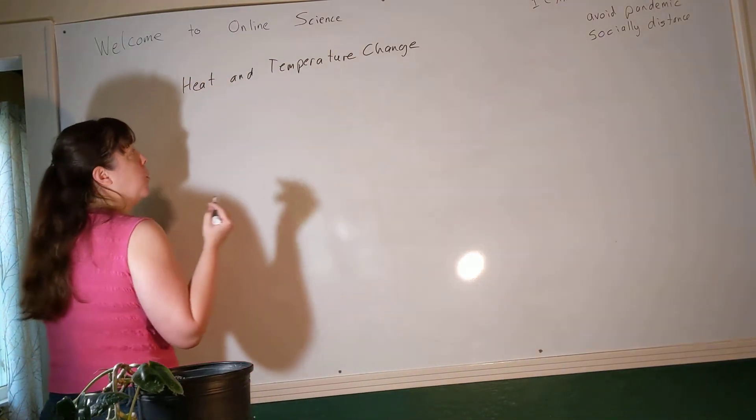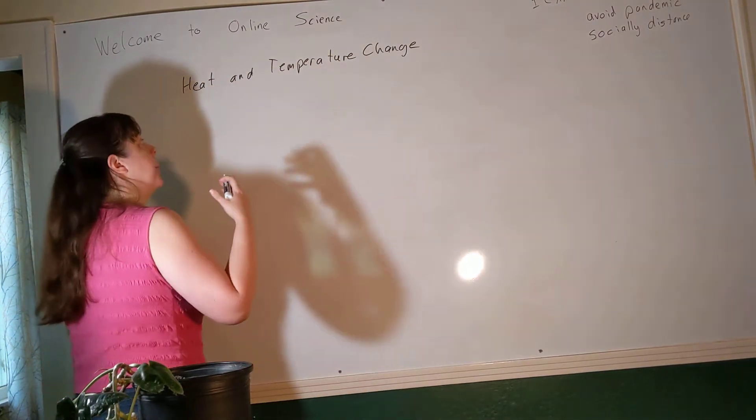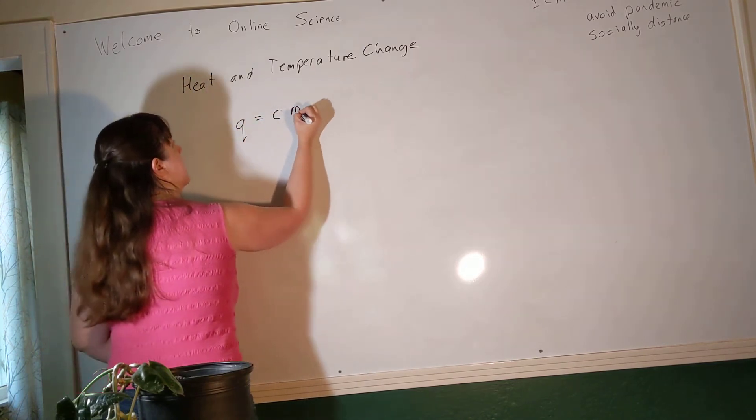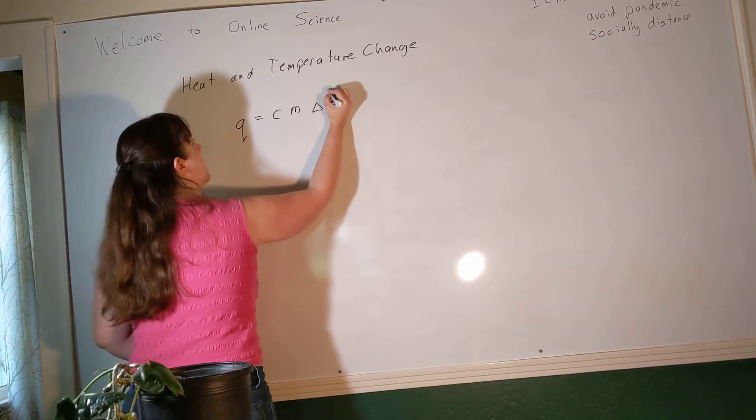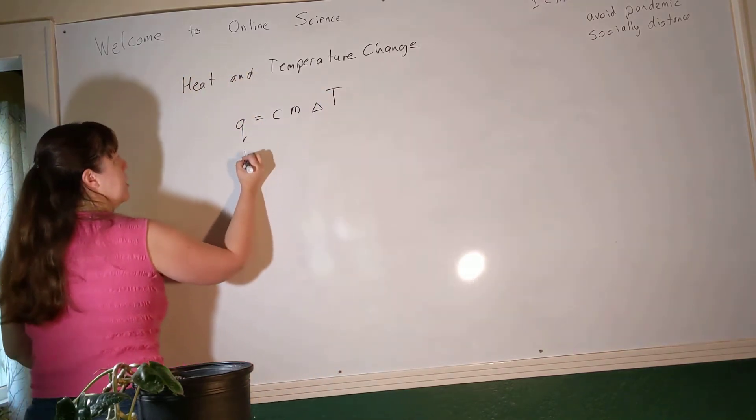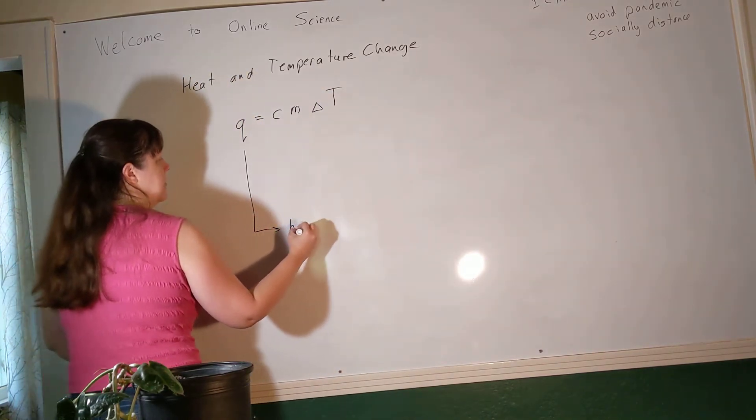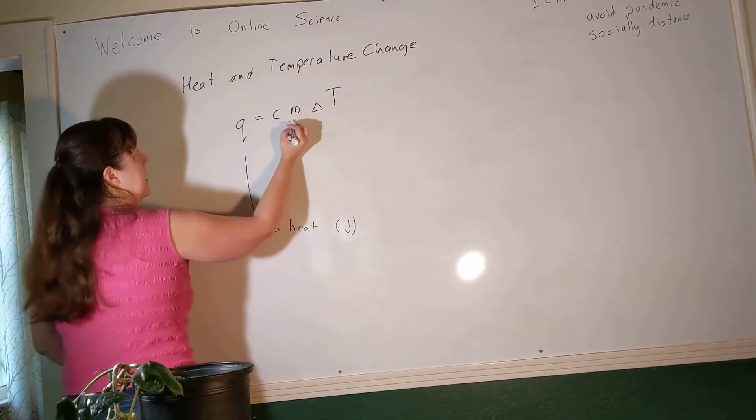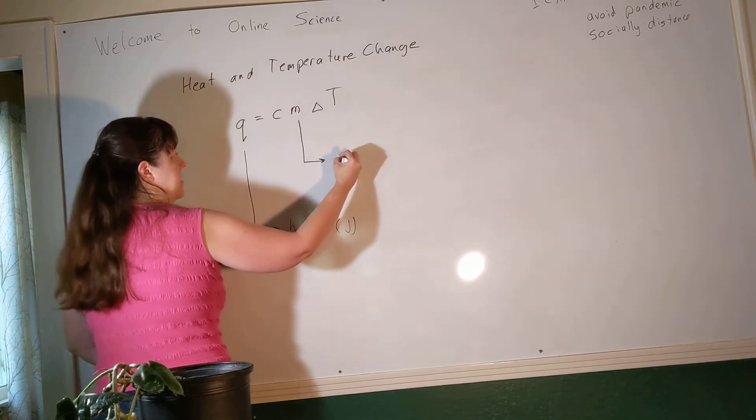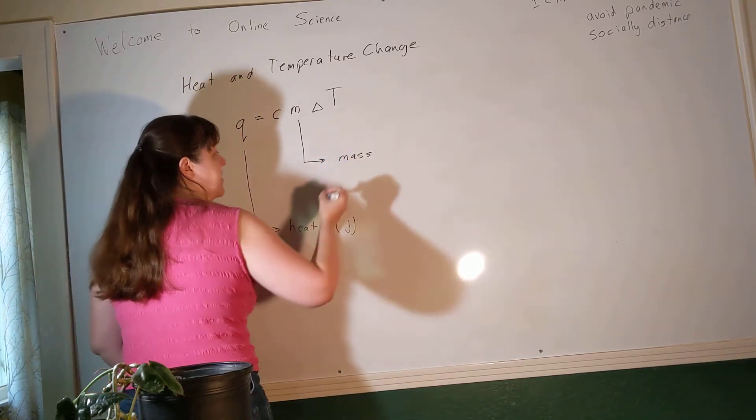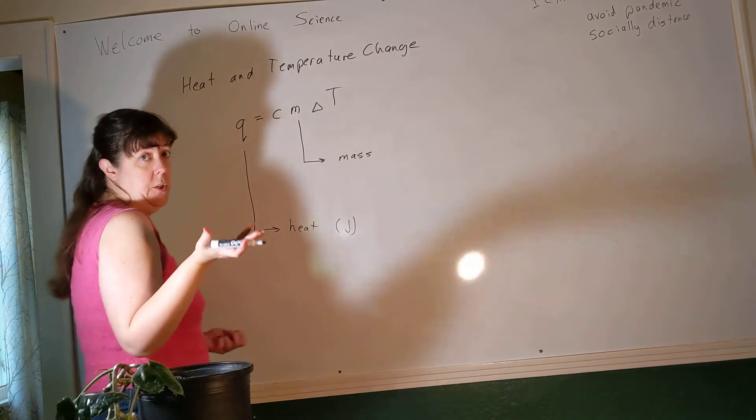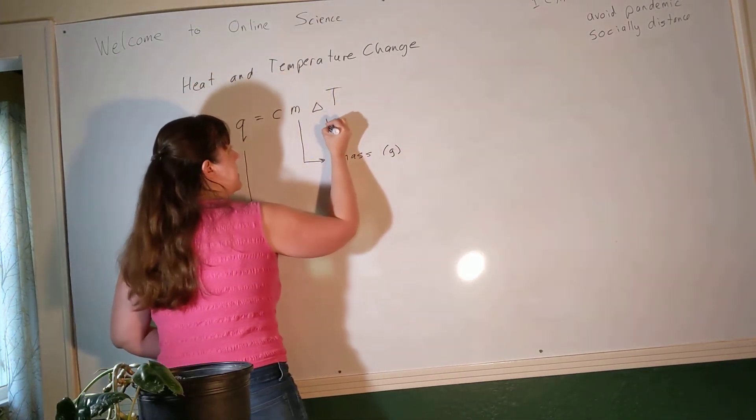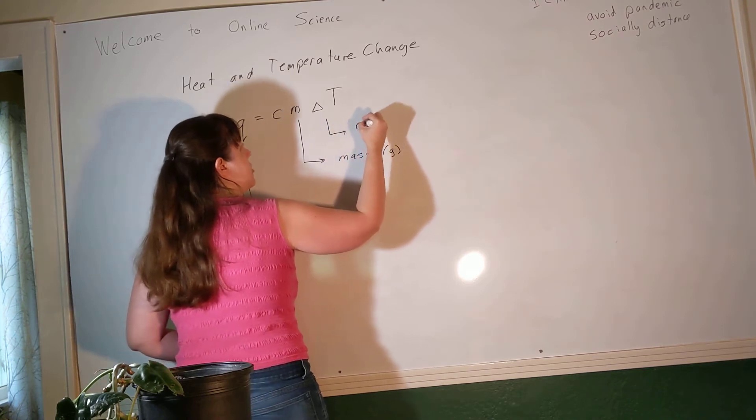Well, the amount of heat required to change temperature is given by a pretty straightforward equation, which is Q equals Cm delta T. Q, we remember, is heat. Heat is going to be measured generally in joules. M is the mass. It makes sense that the bigger something is, the more heat is required to change its temperature. We measure mass in grams in chemistry. And then delta T is the change in temperature.